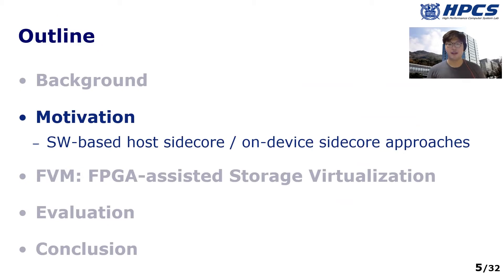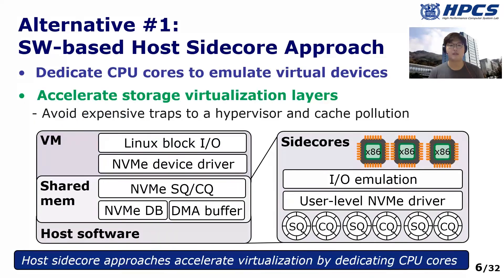To provide highly flexible VM management and minimal virtualization overhead, side-core mechanisms are now considered as a highly promising solution. I will introduce two existing side-core solutions. First, host side-core approaches can speed up storage virtualization by avoiding expensive traps to the hypervisor and reducing cache pollution. The dedicated side-cores process guest I/O operations through a shared memory region, so there is no need to call VM exits to submit NVMe commands.